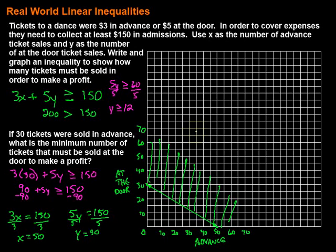Sometimes people don't like graphing, but it's kind of handy — create a nice accurate graph and you don't have to calculate anything further. Real world linear inequalities are handy because they allow us to look at different situations and see all the different ordered pairs represented by the shaded region that would work in our given situation. In this case we had ticket sales. I hope this video was helpful — keep working hard on your math, you can do it.